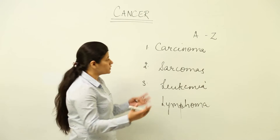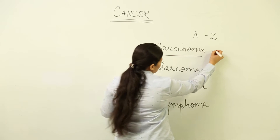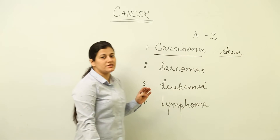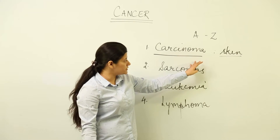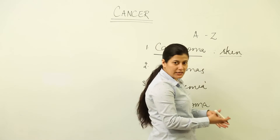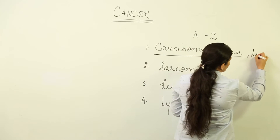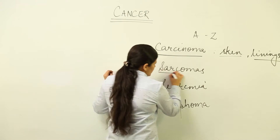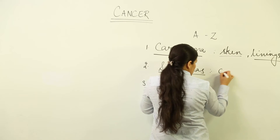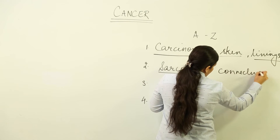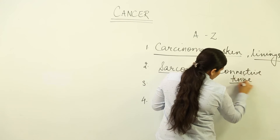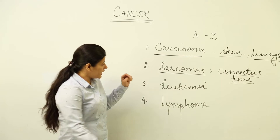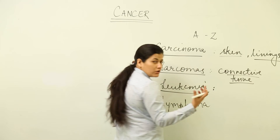If we talk about carcinoma, these are the cancers of the skin. If the skin is infested with cancerous growth, it would be covered under carcinoma. In the internal body, the visceral organs — if the linings of those organs become cancerous, they will also be categorized under carcinoma. The next type is sarcoma, which is the cancer that usually infests connective tissue — it could be bones, cartilage, or muscles.